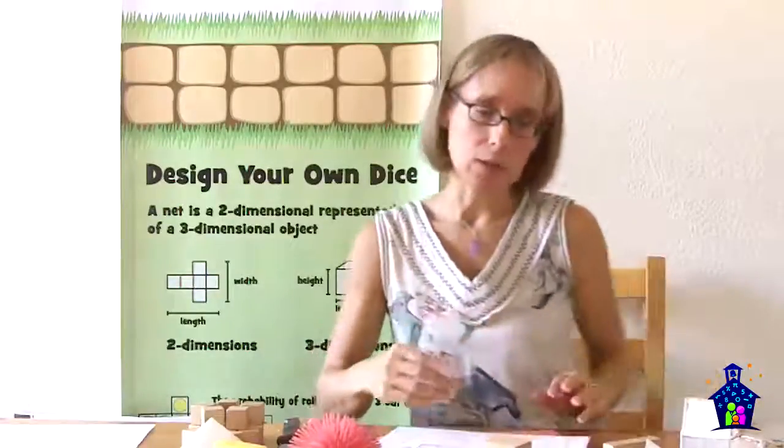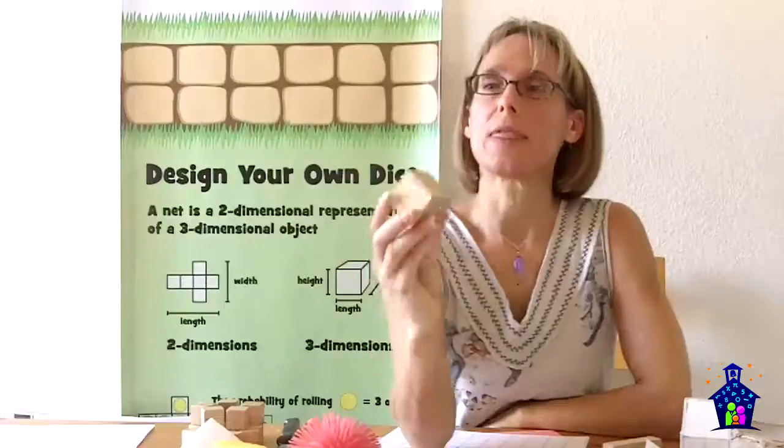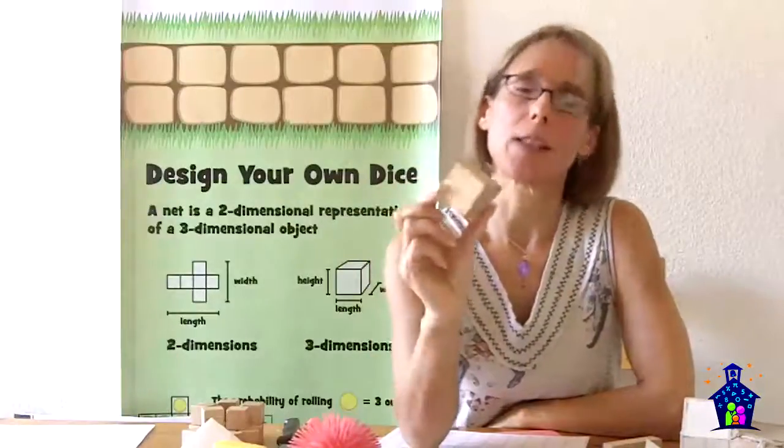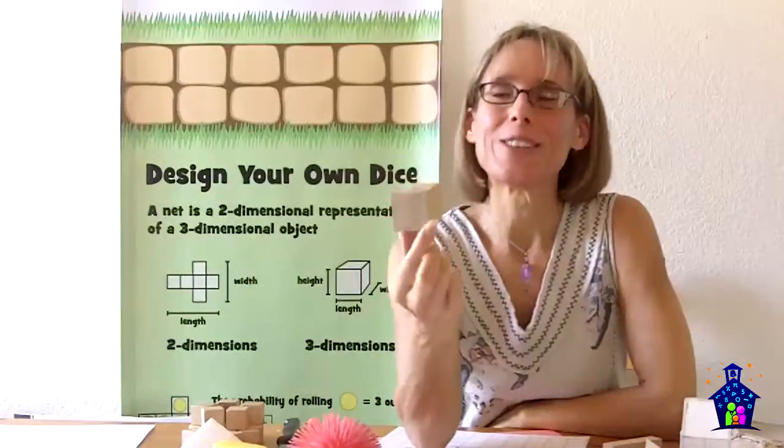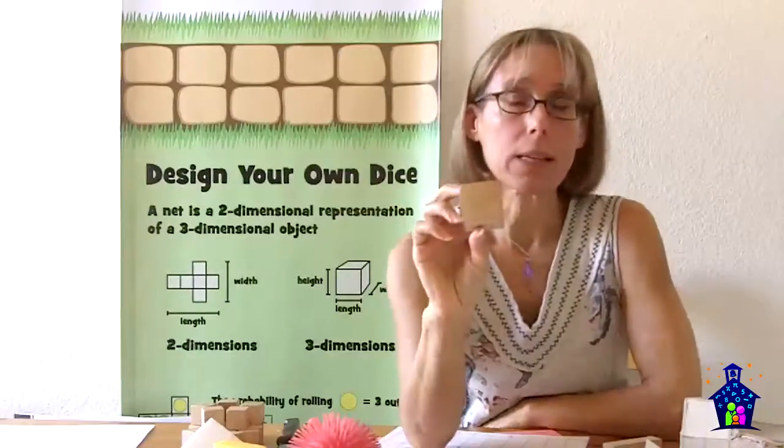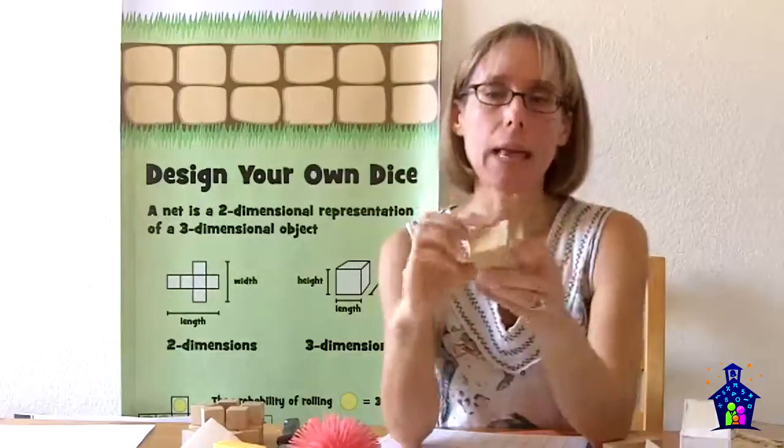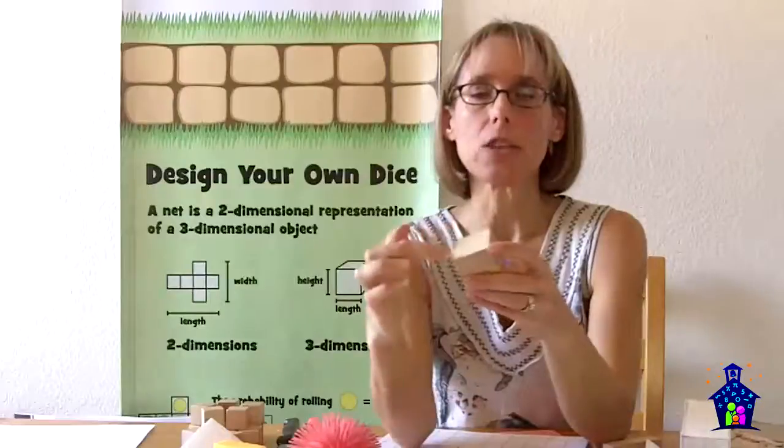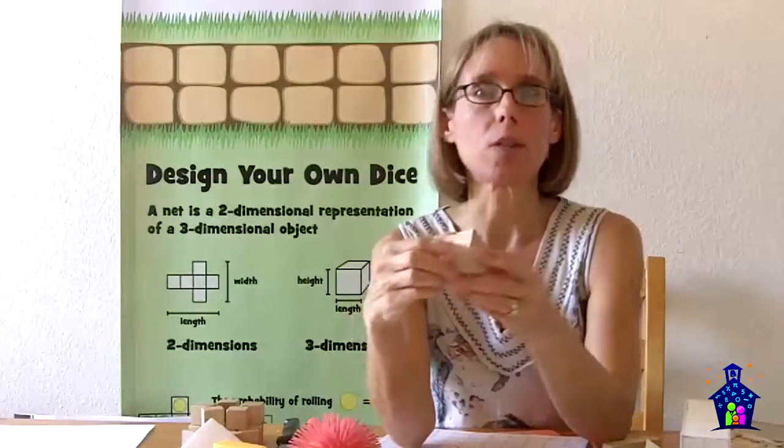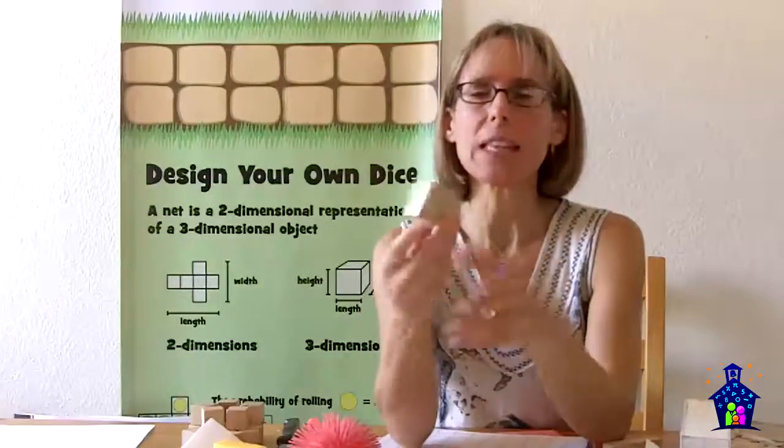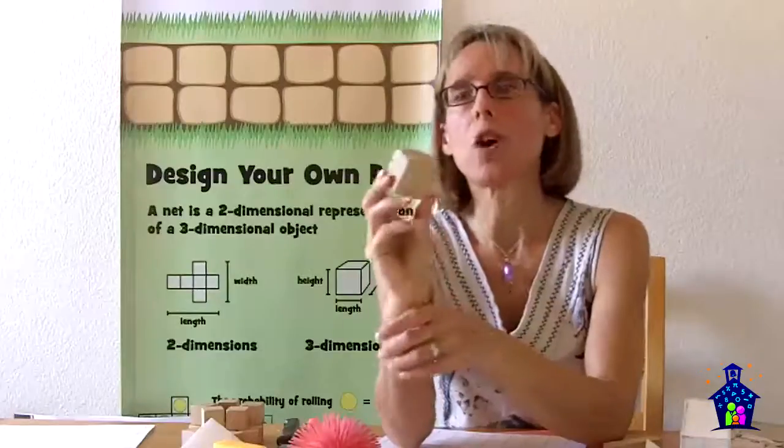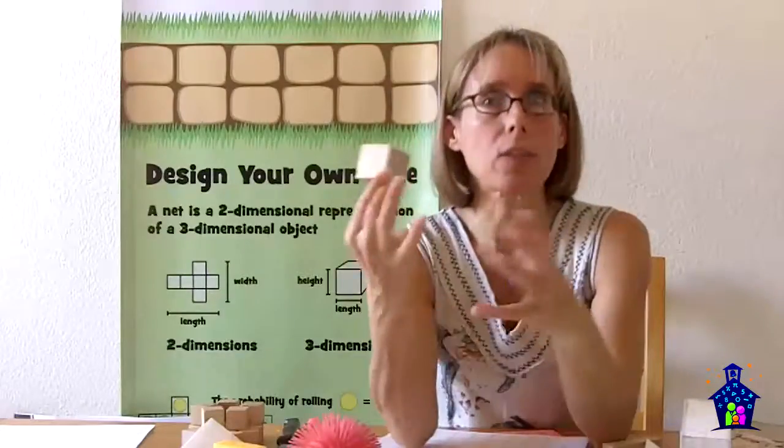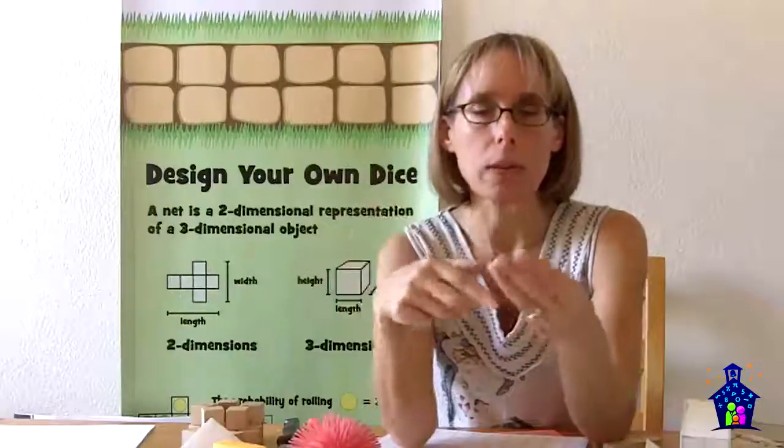So the first thing that I do with students is ask them what this is. And, of course, they're going to say, well, that's a wooden cube. Okay, well, what else do you know about it? Well, it's made up of squares, six of them. It has edges where the edges meet. Those are the vertices. And then I say, well, in geometry, we also call this a solid.